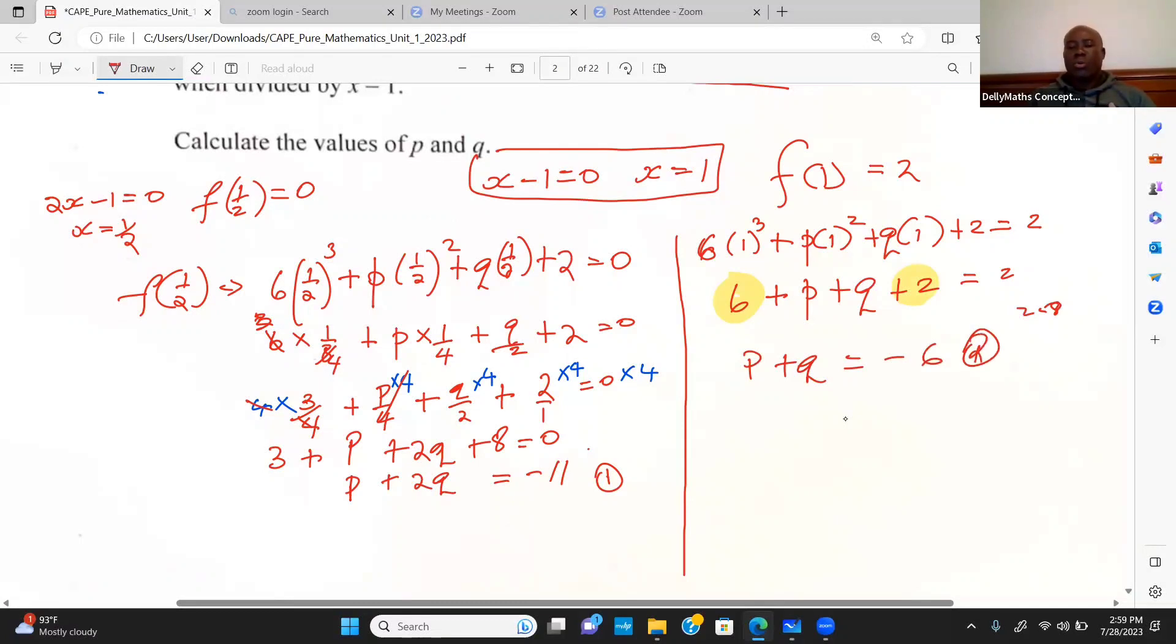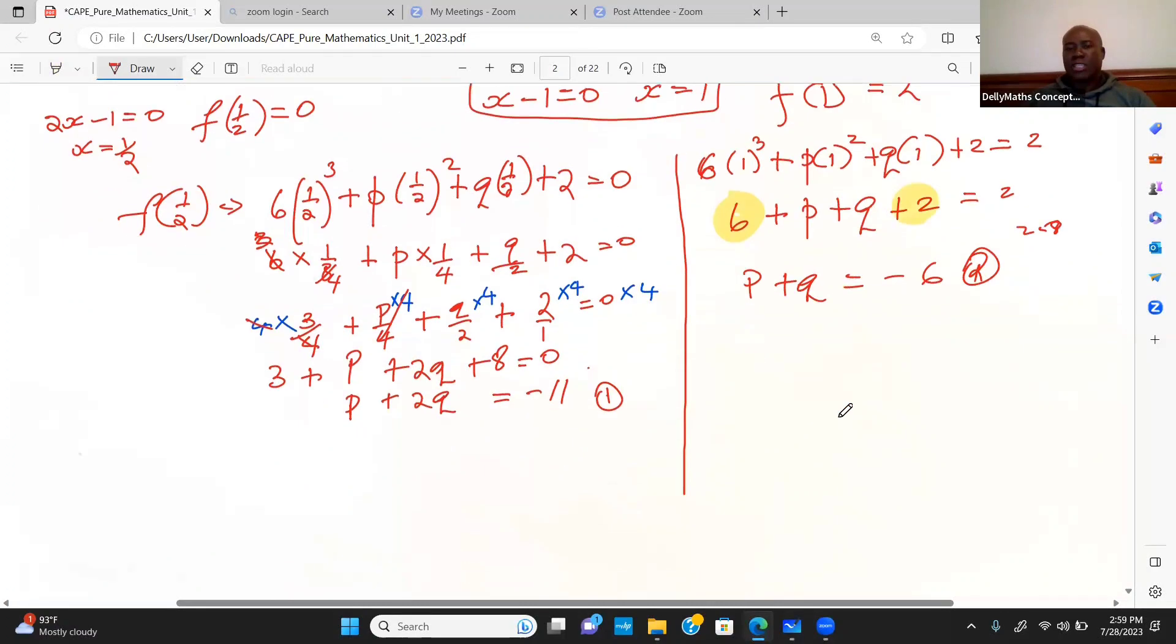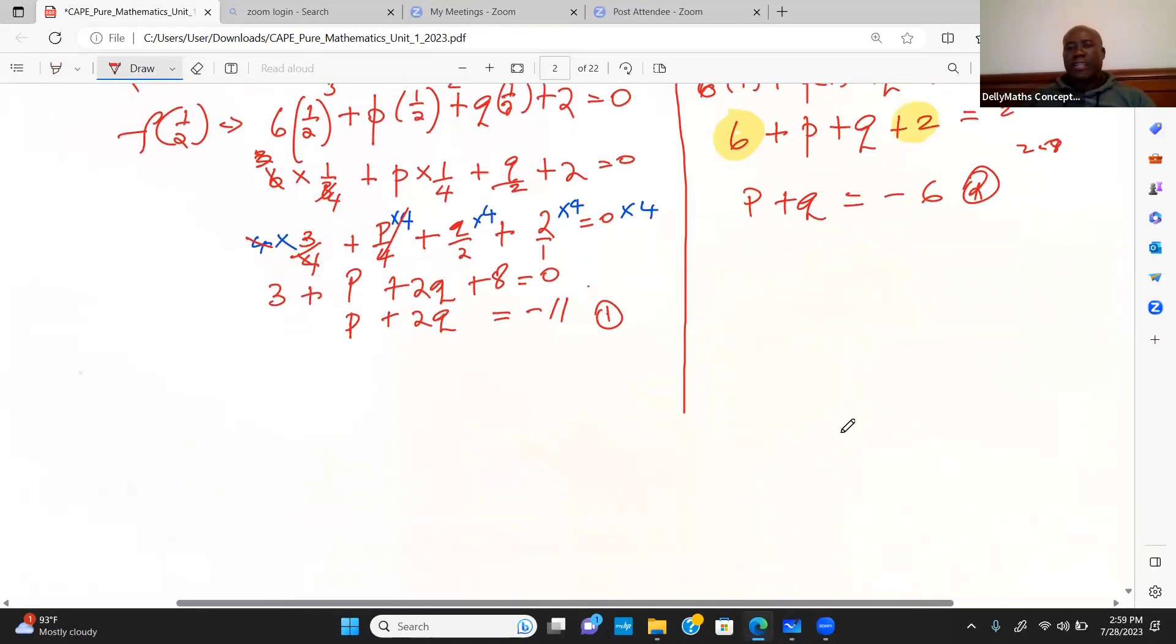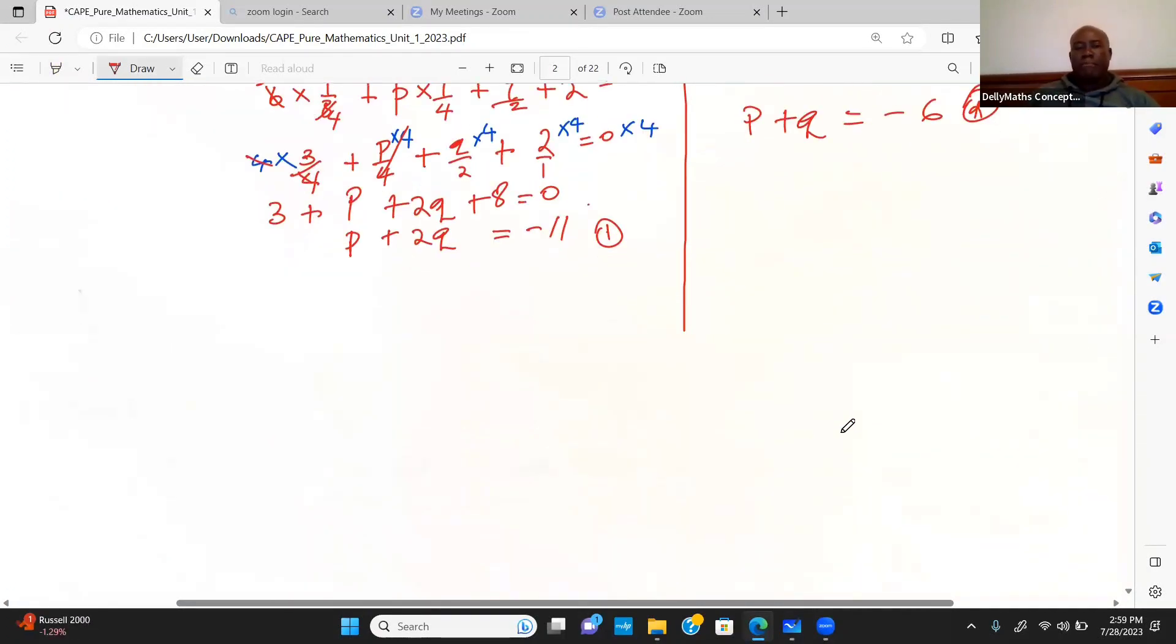I have two equations now. I could solve them simultaneously in an effort to find values of p and q. Equation 1: p plus 2q is equal to negative 11. Equation 2: p plus q is equal to negative 6. What I could do now is just subtract. I could just employ a subtraction there.